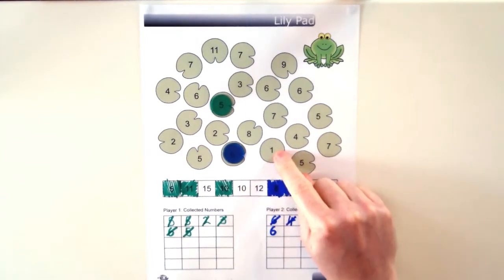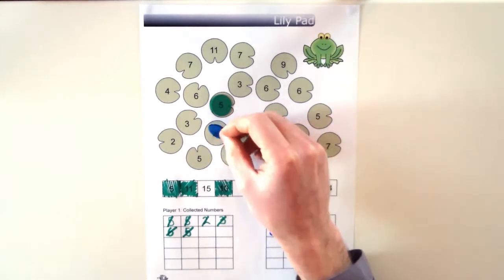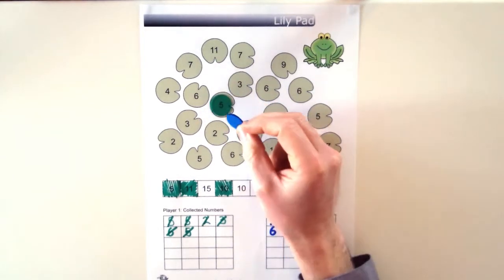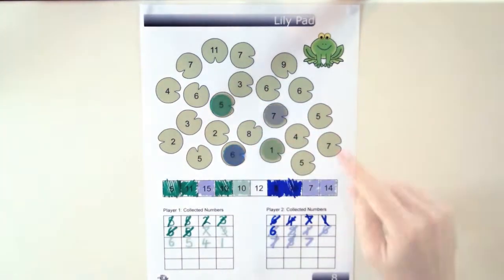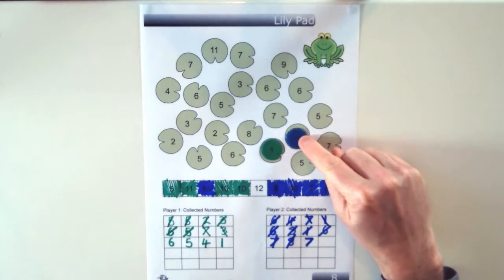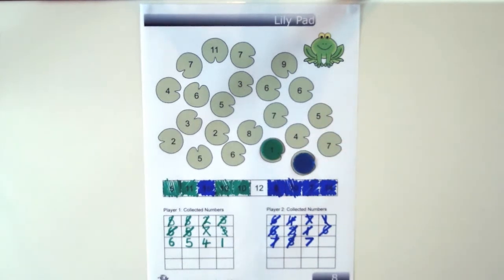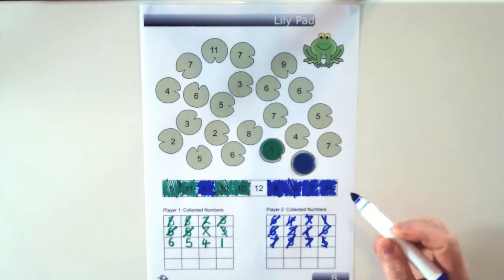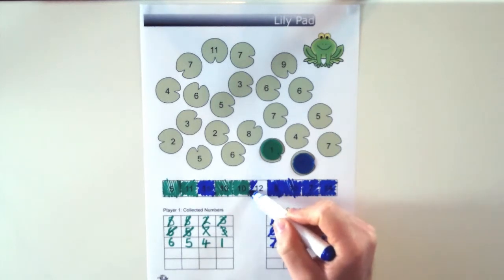Now also with this game you're not allowed to land on a lilypad that's occupied by the other player. So you have to move around them instead. Now blue can move 1, 2 to the 5. And now it can add 7 plus 5 which equals 12 and is the final target number.